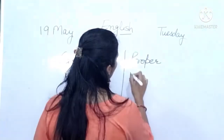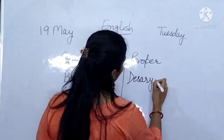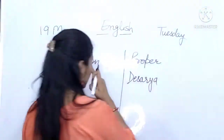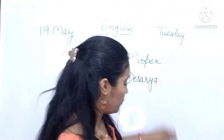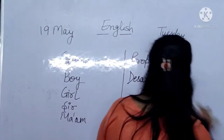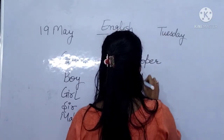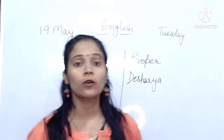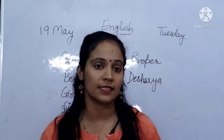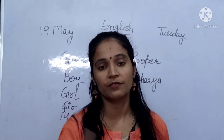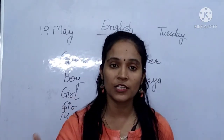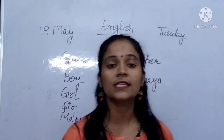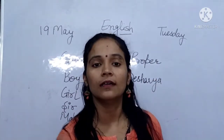We gave boy a name like Deshariya — that is a proper noun. Like now girl — she is very intelligent girl, she is very sweet girl. Like Ashi is a very good girl, Siddhi is a very intelligent girl. So these are the proper names of any girl.